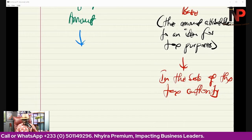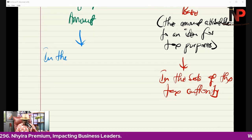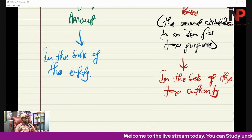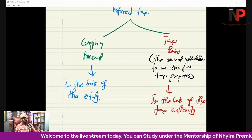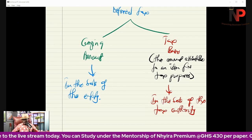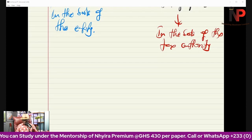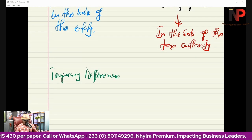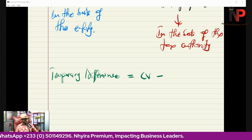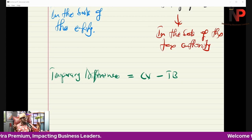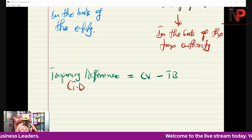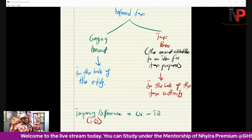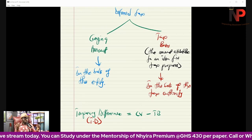The carrying amount, on the other hand, is how the transaction is being carried in the books of the entity. Comparing the two is going to give us the deferred tax. But before we get to the deferred tax, we're first going to get what we call the temporary difference — which is simply the difference between the carrying amount of the item in question and the tax base of the item.